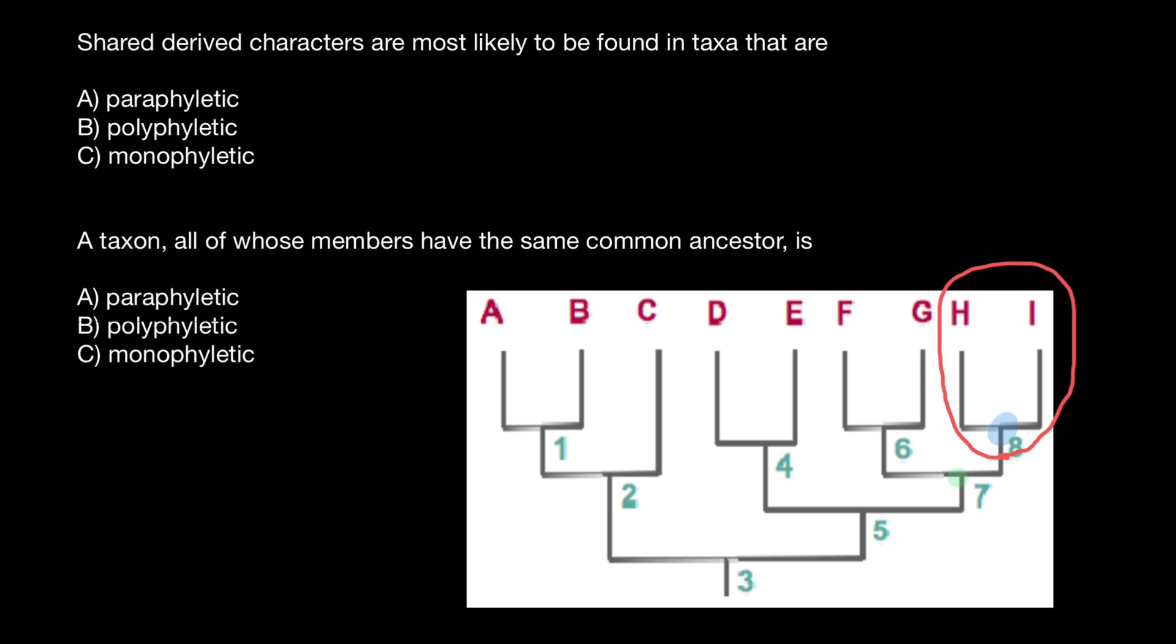Now let's take common ancestor seven. And now also let's circle following taxa G, H, and I. So is it going to be monophyletic group or not? Actually not, because as you see, this common ancestor has also descendant F, this taxon, and it is not included in this circle. So we call such group as paraphyletic group, when in the group some of the descendants is not included, just like in this example.